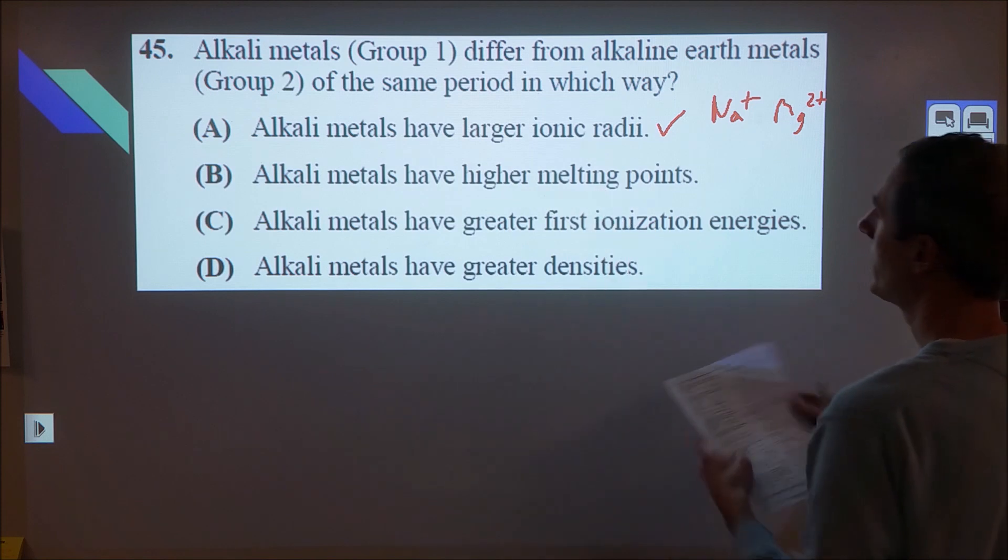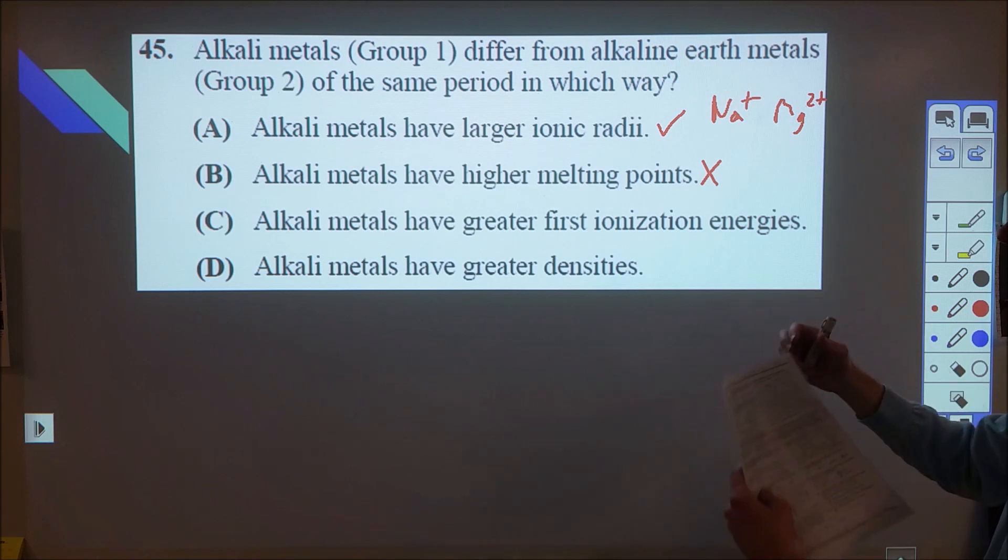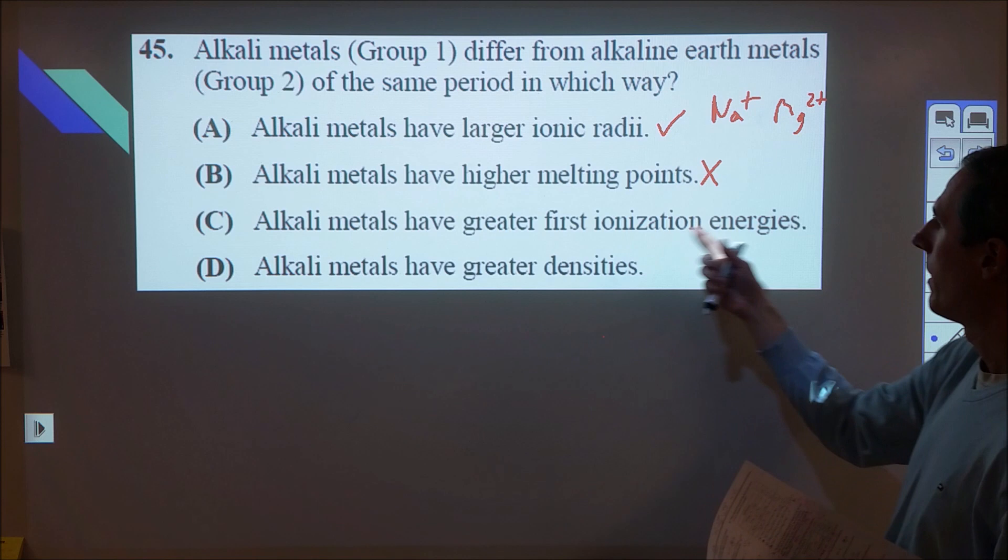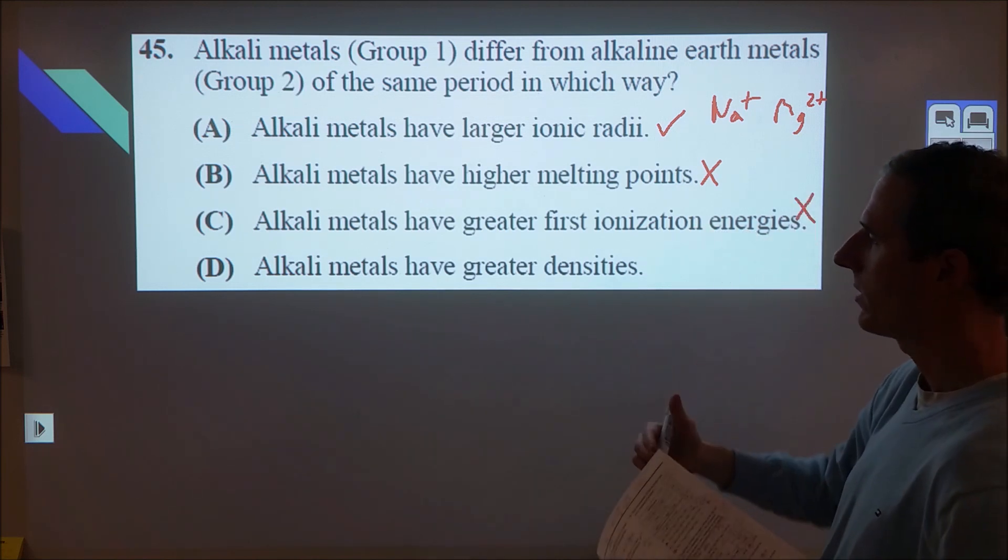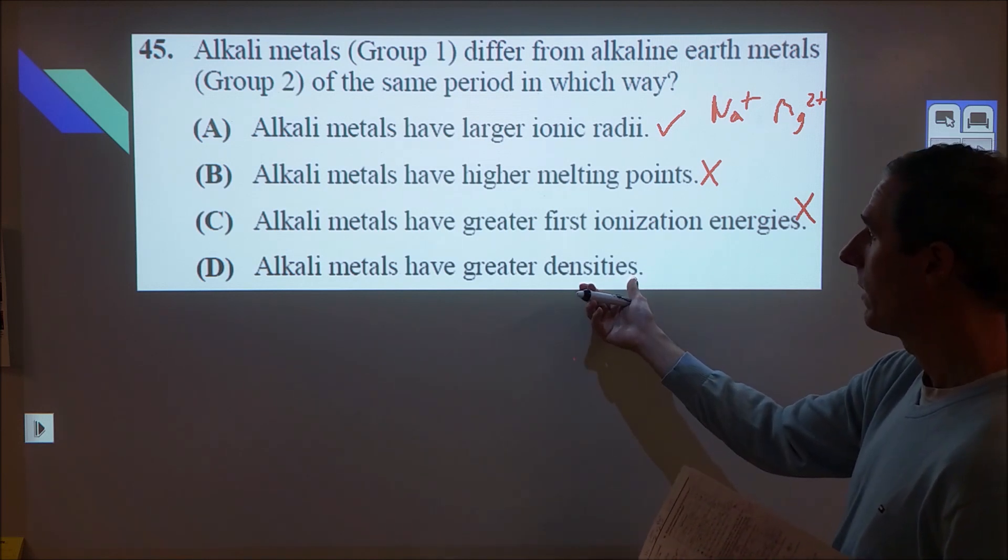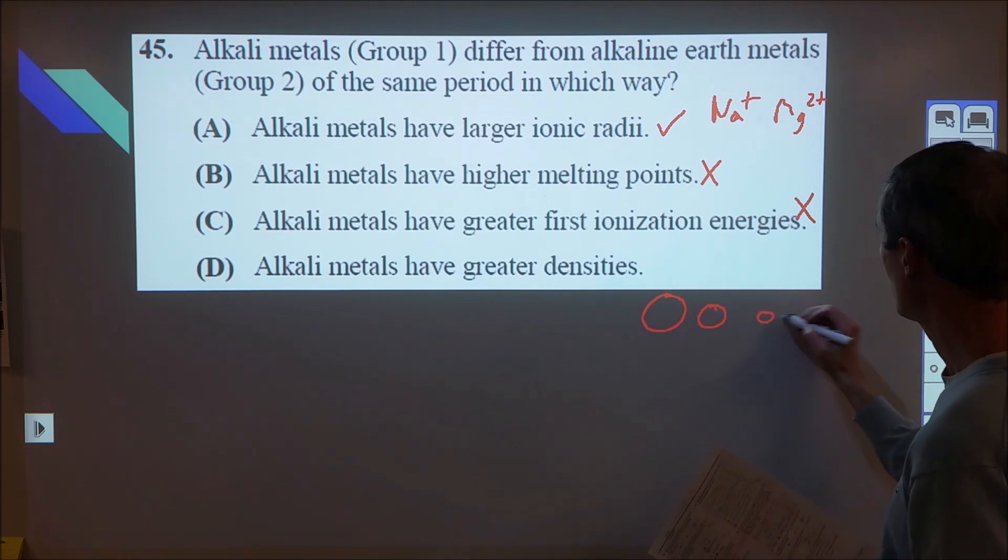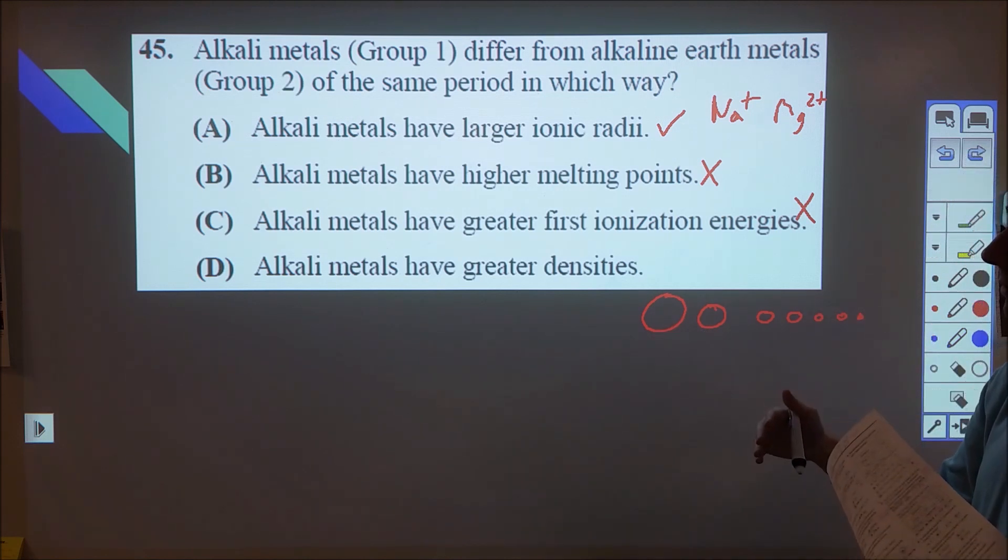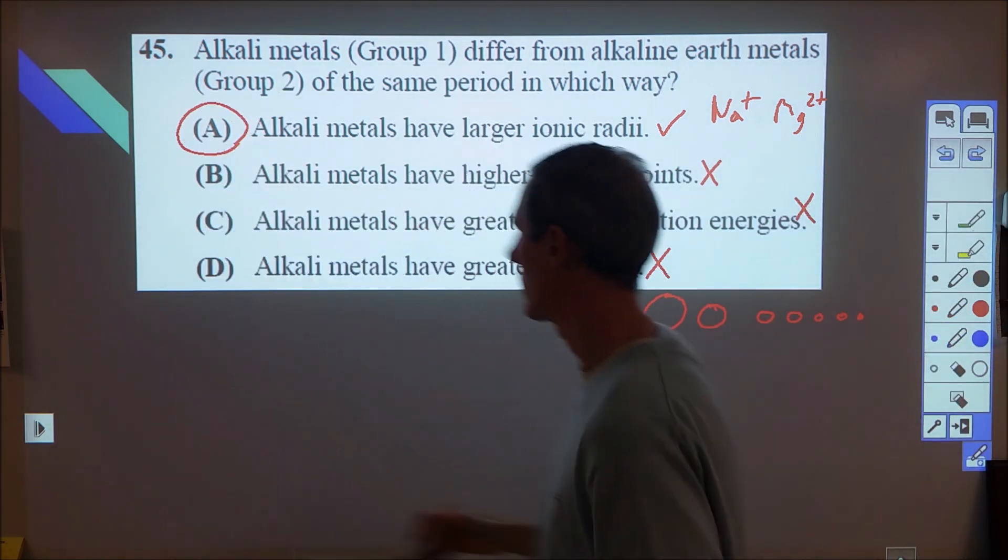That's not correct because they have a single plus one charge, and so therefore they don't experience a very strong metallic bond, which needs to be broken in order to melt it. The greater first ionization energy is also not true. Those have the lowest ionization energies due to the mass amount of shielding relative to the nuclear charge. And the alkali metals have great densities. That's not true. The alkali metals, if you think through your kind of trend of size as you go across the periodic table, is that your alkali metals are the biggest, and so therefore they would have a large volume, which would decrease the density. And so therefore, we were right in the first place, A was the correct choice.